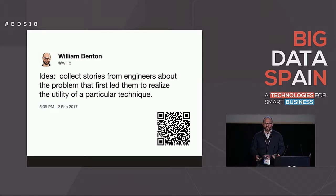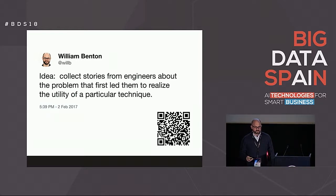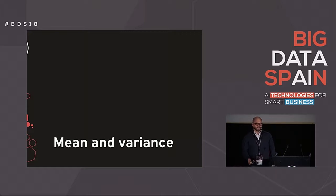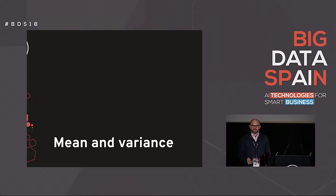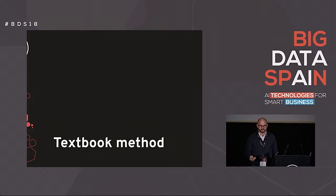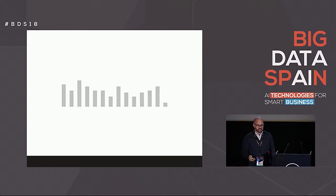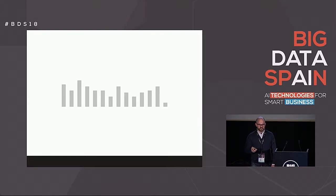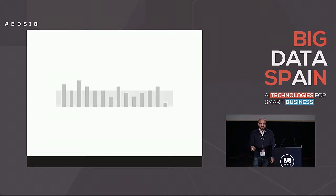I'm talking about techniques today where linear and logarithmic aren't good enough. The problem where I ran into these first was in calculating mean and variance estimates. You probably already know how to calculate mean and variance estimates for small data — there's a textbook technique that works really well. The idea is you have a bunch of samples, you sum those samples, and then you divide by the number of samples and you get a mean.